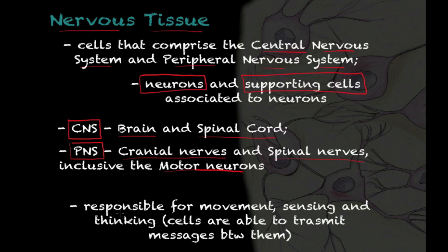The actual function of nervous tissue in your body: these cells are responsible for movement, sensing, and thinking. By movement, I'm talking about the fact that these cells are associated with muscle tissue and they're able to communicate between one another and cause movement — though they do not cause movement themselves; they rely on muscle tissue. This is possible because these cells are specialized into transmitting messages between one another.